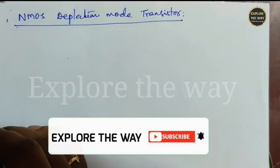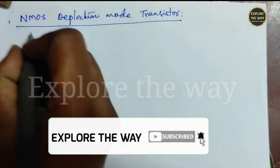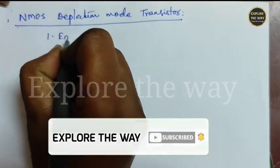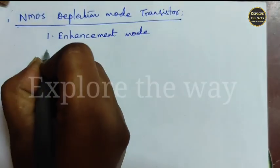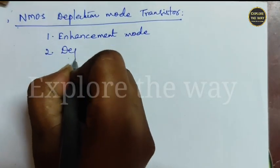Any transistor can be fabricated in two modes. One is enhancement mode and the other one is depletion mode.